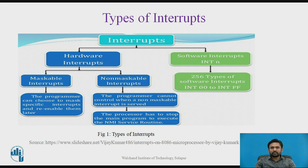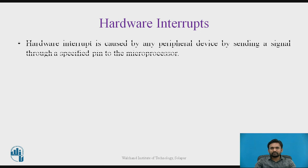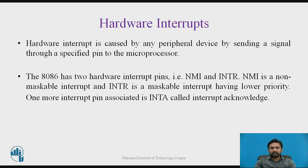Now about software interrupts — there are software interrupts like INT n, and there are a total of 256 different types of software interrupts available. For hardware interrupts, they are caused by any peripheral device by sending a signal through a specified pin to the microprocessor. The 8086 has two hardware interrupt pins: NMI and INTR. NMI is the non-maskable interrupt and INTR is the maskable interrupt having lower priority.